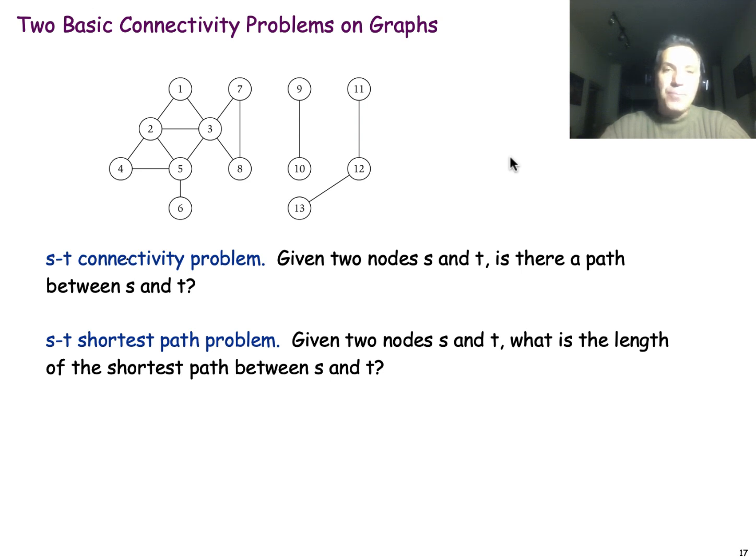The second problem is, what is the shortest path, in terms of the number of hops or number of edges, between a specific pair of nodes? For example, if I give you nodes 1 and 7, there is a path of length 2. There is no path that is less than that. And if you pick a path 1, 2, 5, 3, 7, that is not the shortest possible path.